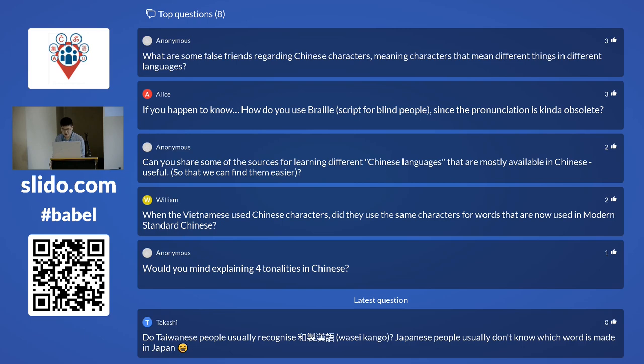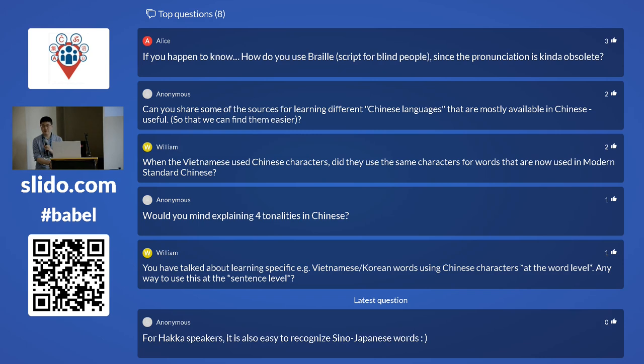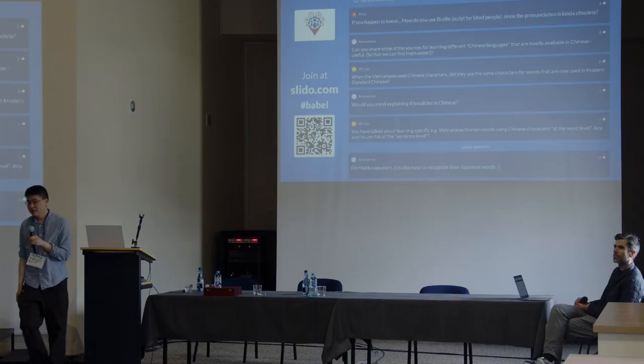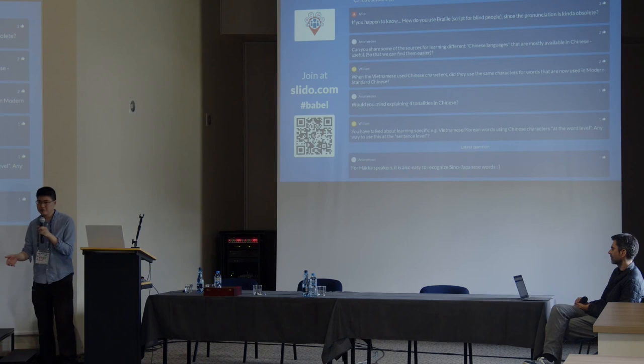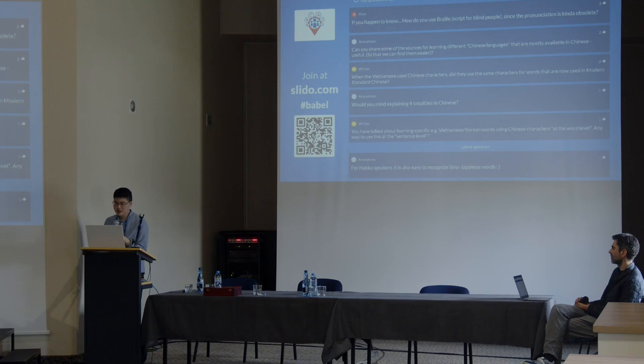What are some false friends regarding Chinese characters — characters that mean different things in different languages? There are quite a lot, especially between Japanese and Chinese. For example, 'tegami' in Japanese means 'letter' (written correspondence), but the characters — written 'shǒuzhǐ' in Chinese — mean 'toilet paper' in mainland China. 'Tegami' is actually a kunyomi word (native Japanese pronunciation), so the meaning can be quite different from the Chinese original.